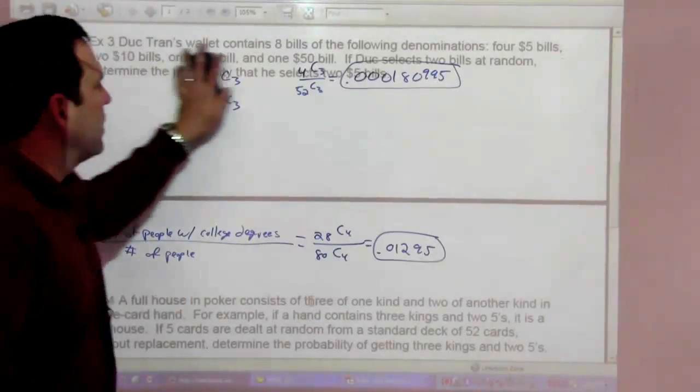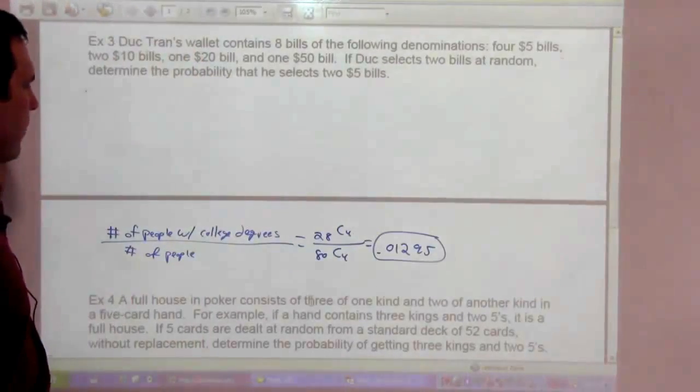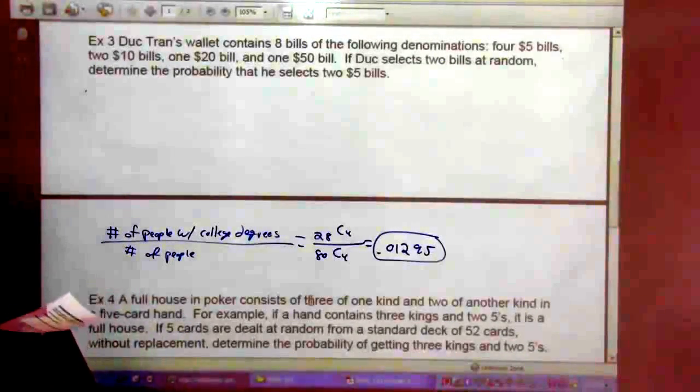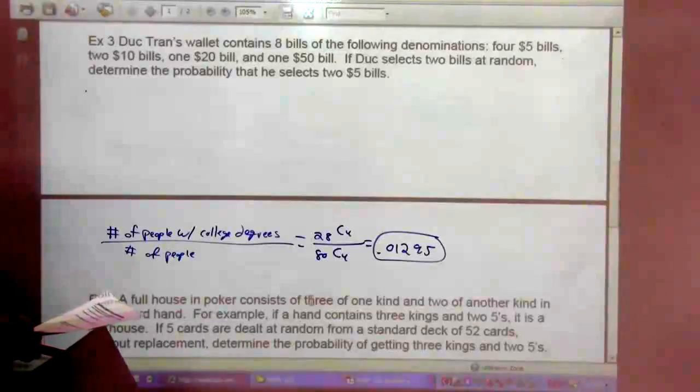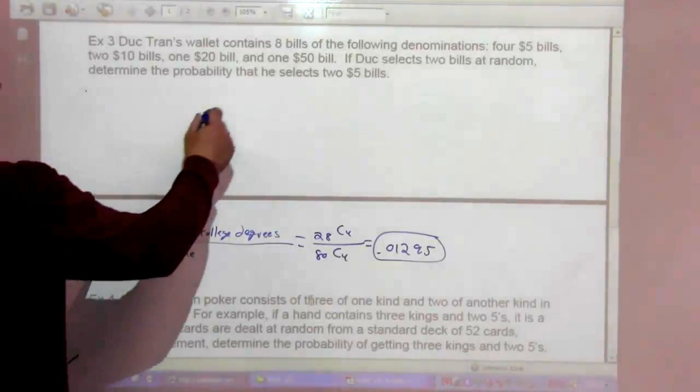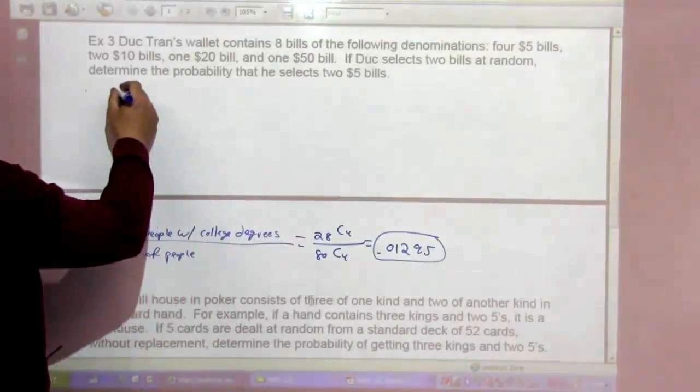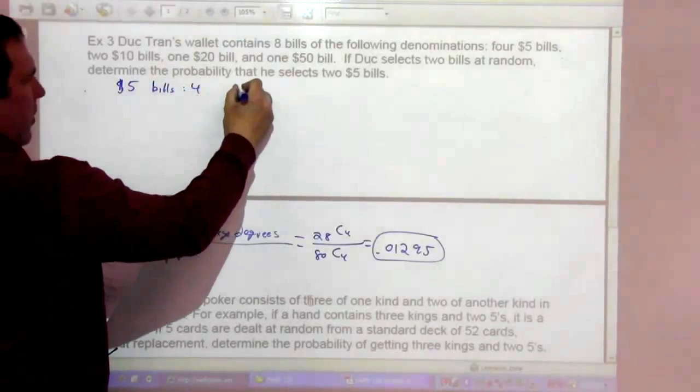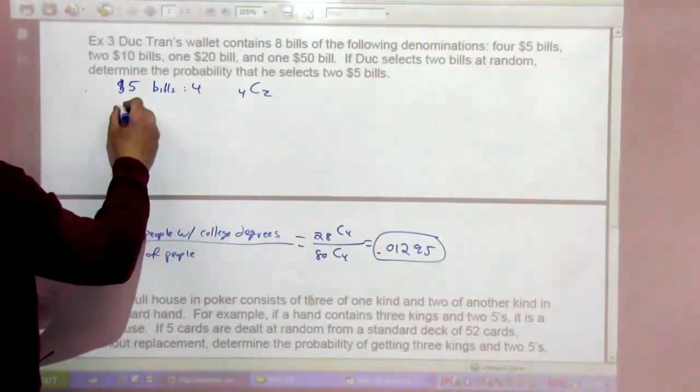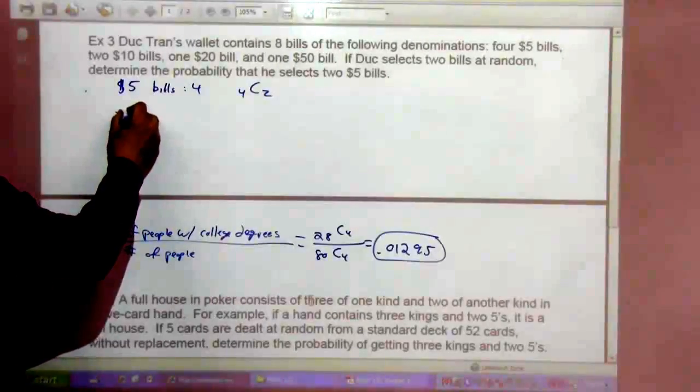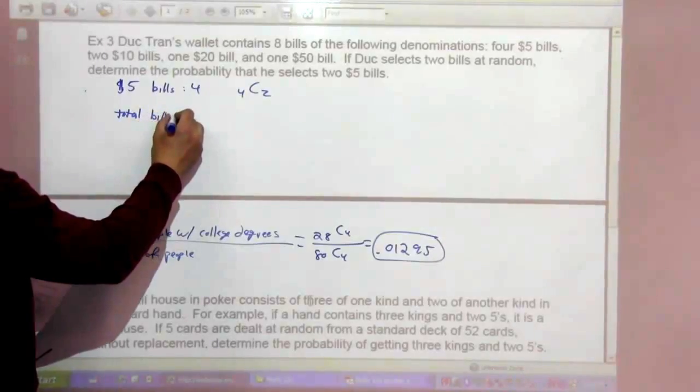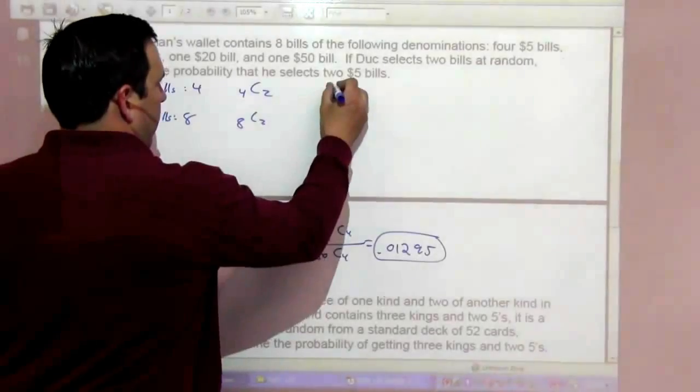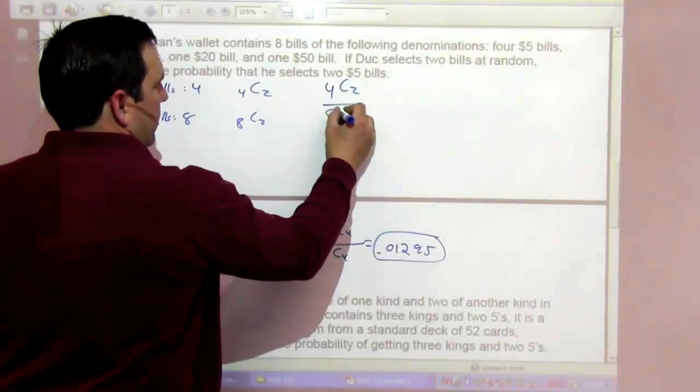Duck Tran's wallet contains 8 bills of the following denominations: four $5 bills, two $10 bills, one $20 bill, and one $50 bill. If Duck selects 2 bills at random, determine the probability that he selects two $5 bills. So he has four $5 bills. So it's going to be 4 choose 2. And there's a total of 8 bills, 8 choose 2.